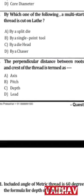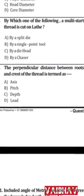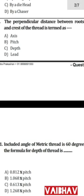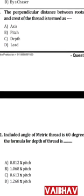Regarding thread terminology: the threads above the minor diameter are called crests, and those at the minor diameter are roots. The answer for question 5 is confirmed as C — depth.